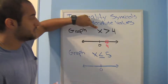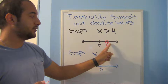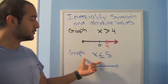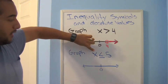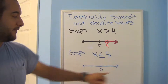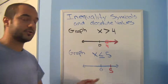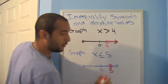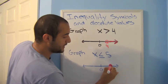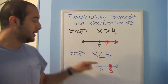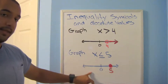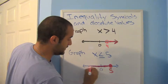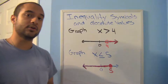All numbers greater than four need to be to the right, so I shade to the right. Now this one says x less than or equal to five — all numbers less than or equal to five. My main number is five, which is positive so it's to the right of zero. This is a non-strict inequality, so it includes five — I circle it and shade it in. All numbers less than five are to the left, so I shade to the left all the way to the end.